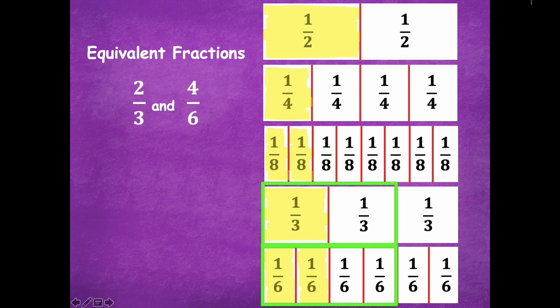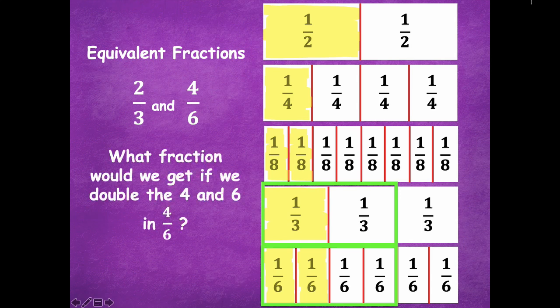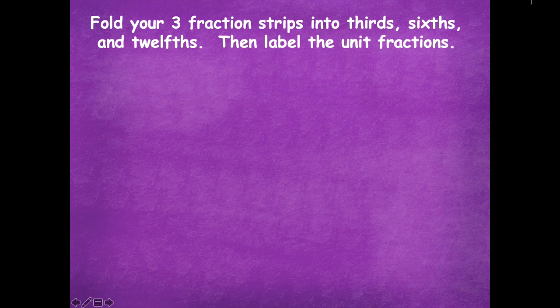Let's look at two-thirds and four-sixths again. What fraction would we get if we doubled the four and six in four-sixths? What would the new fraction be? It's going to be eight-twelfths, because if we double four it turns into eight, and if we double six it turns into twelve.